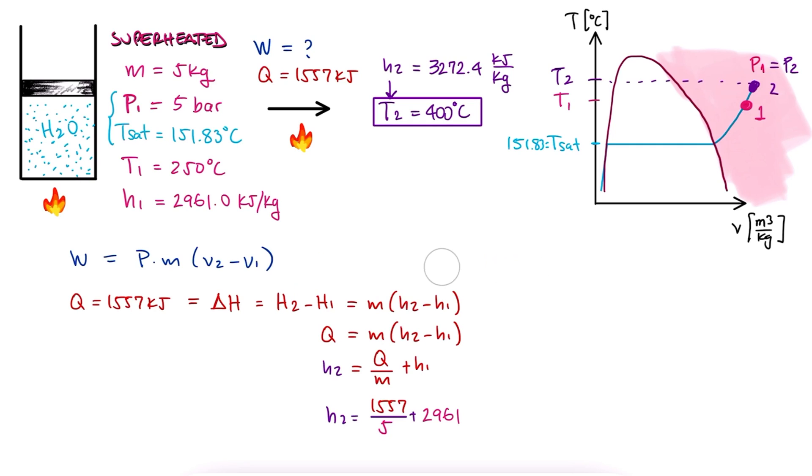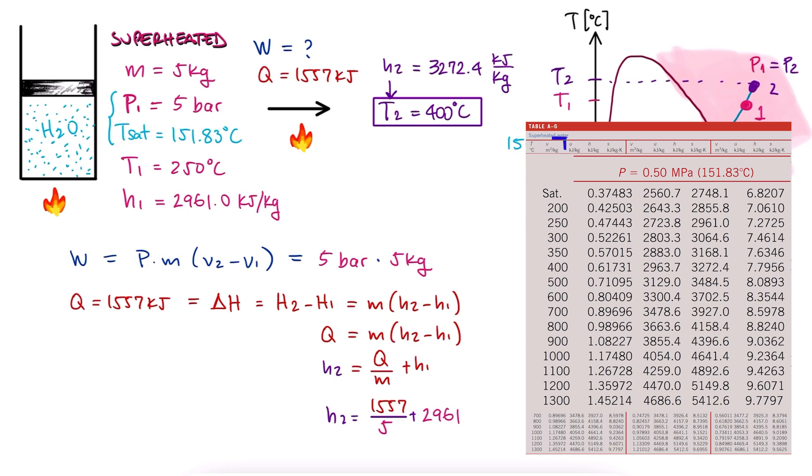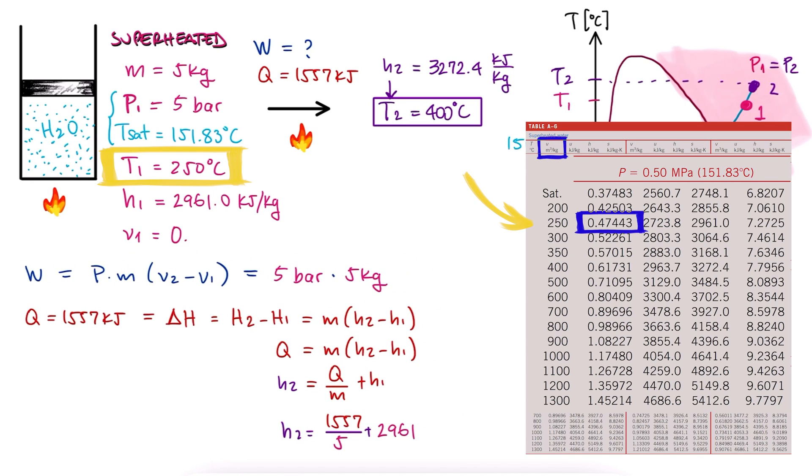Now to calculate the work, we have the pressure and the mass, and we need to find the specific volumes for state 1 and 2. Using the same table, we see that the specific volume for 250 degrees Celsius is 0.47443, and that for 400 Celsius it is 0.61731.